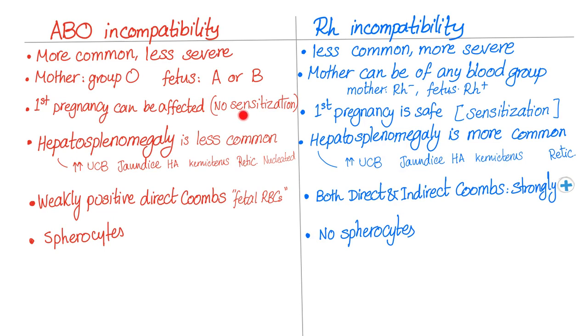In ABO incompatibility, the first pregnancy can be affected because no prior sensitization is required. In RH incompatibility, the first pregnancy is safe because previous sensitization is needed.